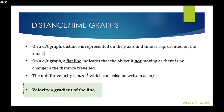The unit for measuring velocity is meters per second, or ms⁻¹. The unit kilometers per hour can also be used to measure velocity. Velocity is equal to the gradient of the line.